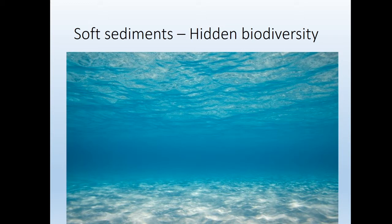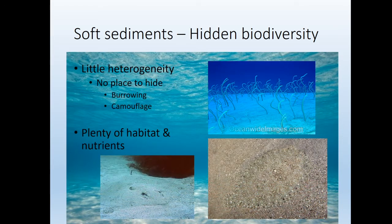Let's start thinking about soft sediments — basically not rocks, but silt or sand. This is really a story of hidden biodiversity. When you go to a beach off Florida and look in the water, there seems to be nothing there. There's little heterogeneity, so there's no place to hide except by burrowing or being extremely camouflaged. If you look closely at this sand you'd see it's covered in stingrays and flounders.